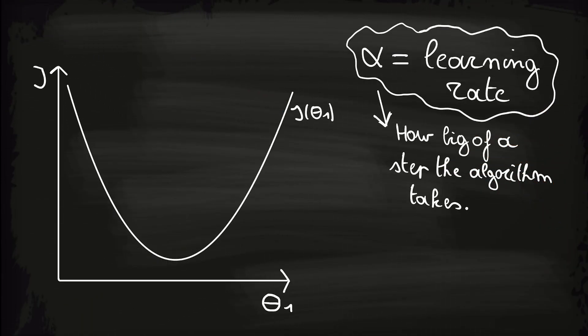For illustration purposes, let us assume a cost function where theta 0 is set to 0. Then we get a cost function that looks like this, where the cost function is only dependent on theta 1. If we apply gradient descent with a large value for alpha, the algorithm will take big steps like this. On the other hand, if we decrease the value of alpha, the algorithm will take smaller steps towards the local minimum.